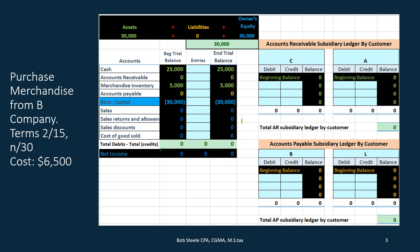We're going to have a receivable subsidiary ledger and a payable subsidiary ledger. These back up the receivable account and the payable account. The general ledger backs up each account by date, so you can see activity for any account such as cash. However, for receivables and payables, we really want to see detail by customer and vendor respectively — to know who owes us money so we can collect, and who we owe money to. In this case we have generic names: Company C, A, B, and L.